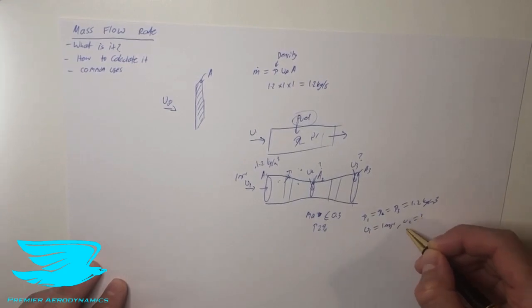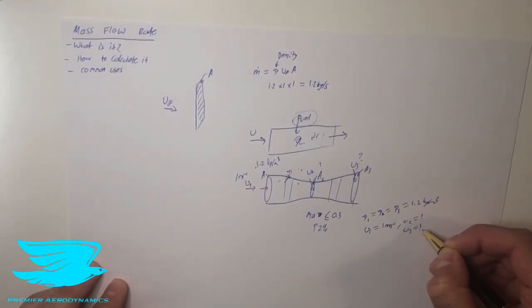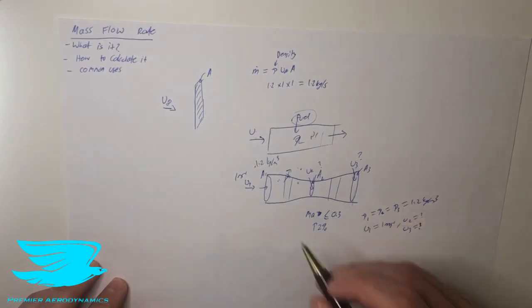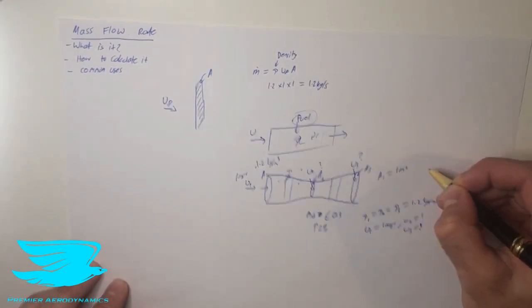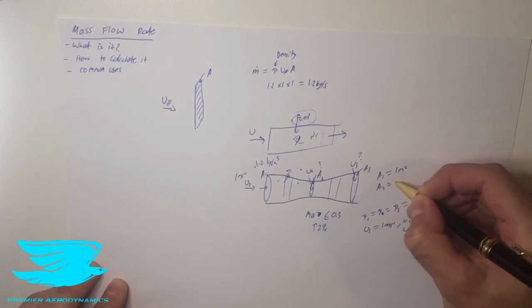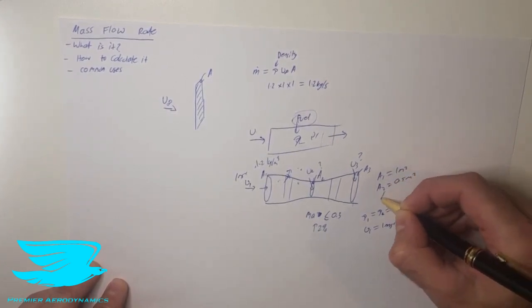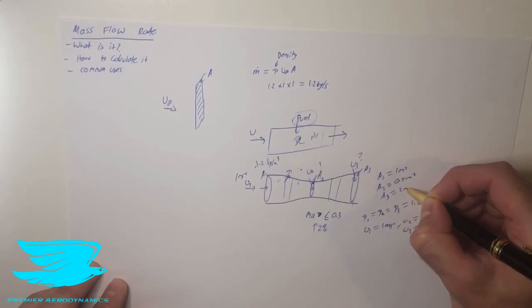u2 we don't know, u3 we don't know, but the areas we do know. So let's say we have A1, this equals 1 meter squared, A2 equals 0.5 meters squared and A3 equals 2 meters squared.